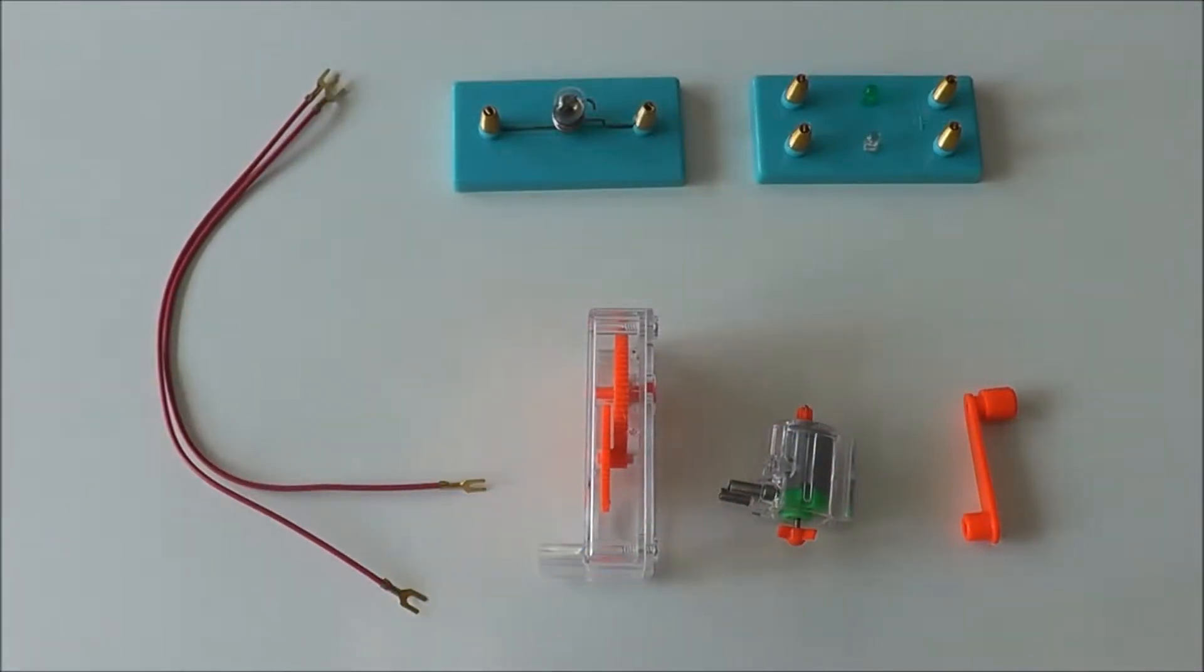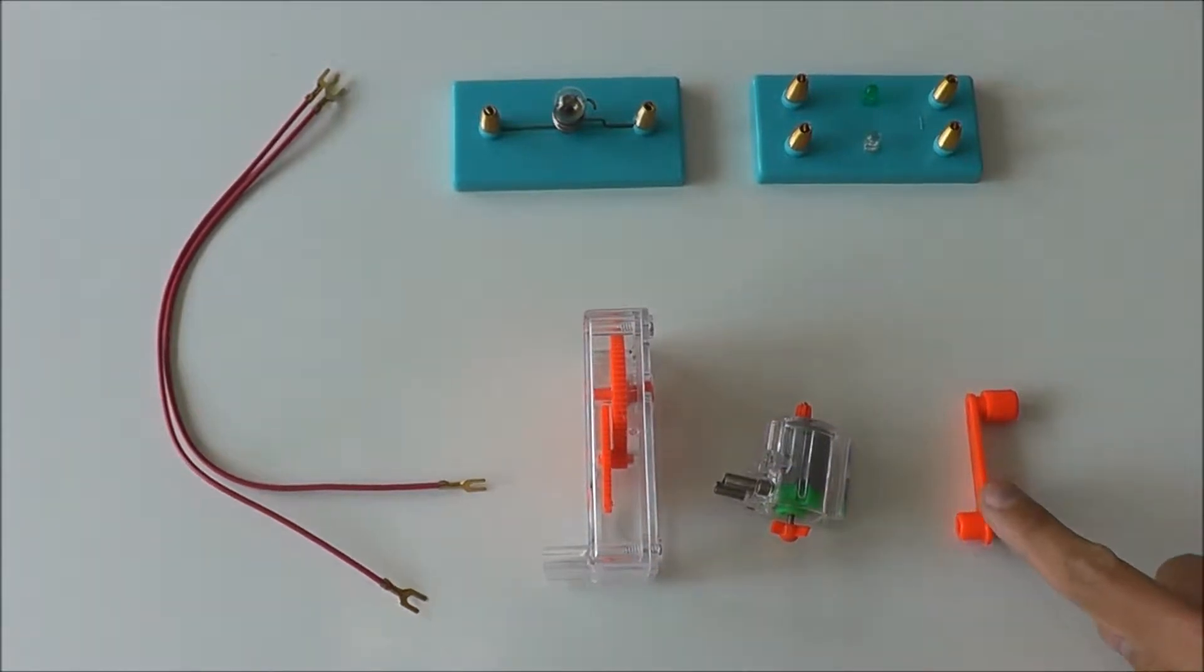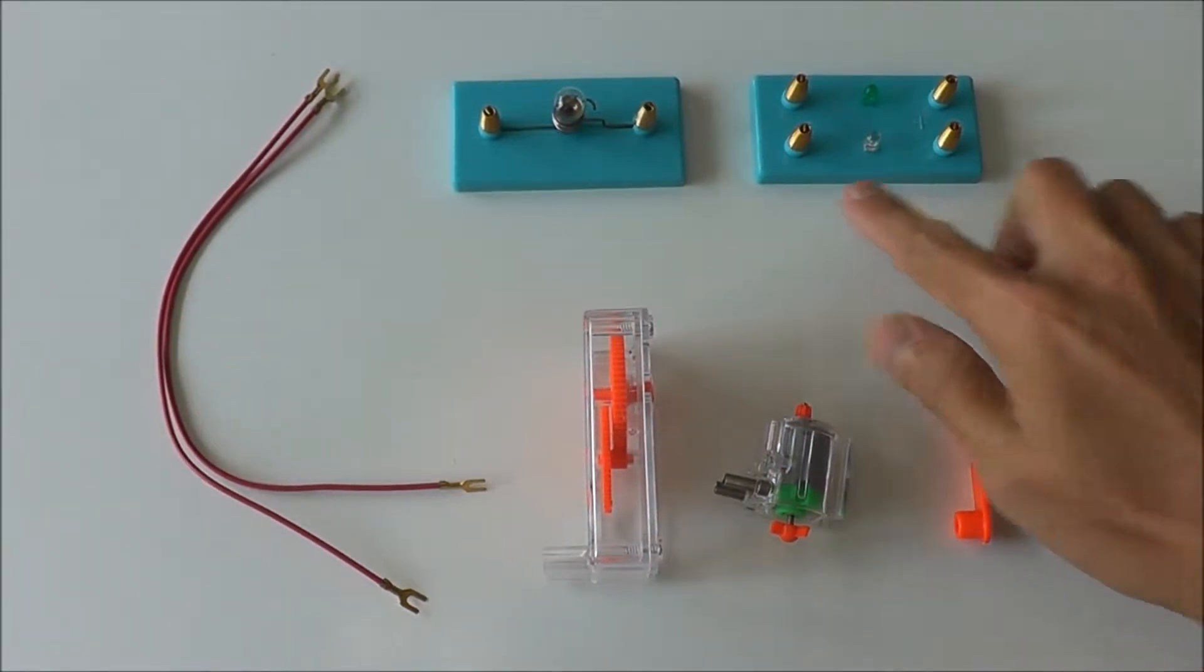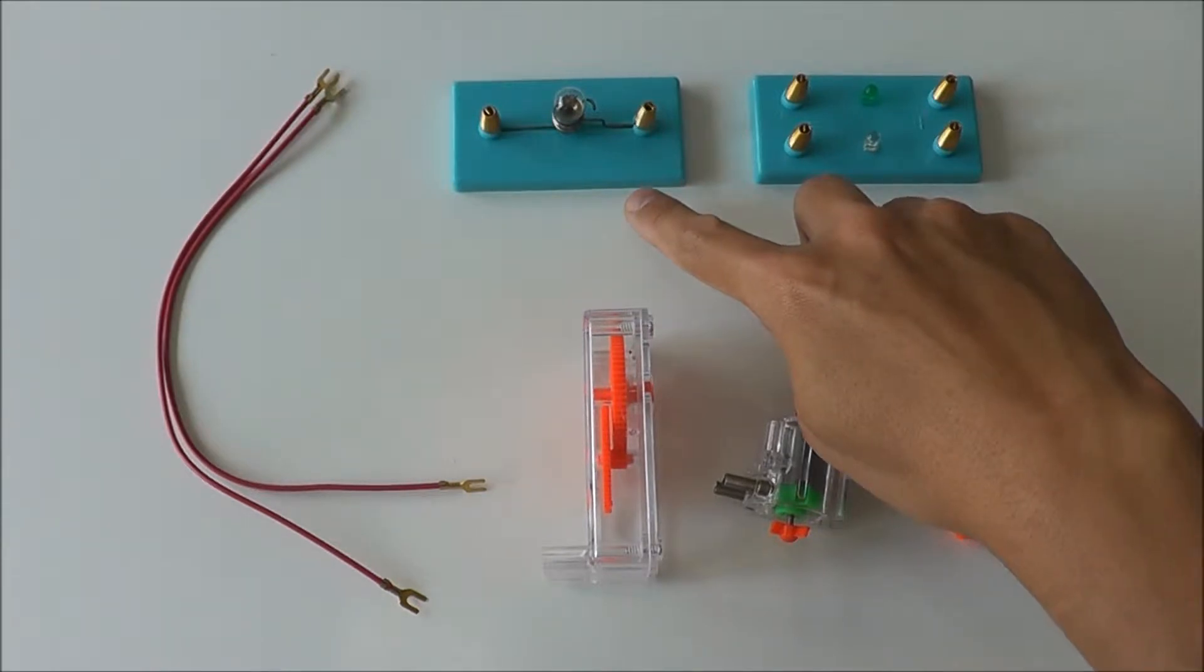In this lesson we're going to learn how to connect the generator circuit. These are the apparatus that we require: we need the gearbox, the motor, the handle, the LED, the light bulb holder with a light bulb, and we need two wires.